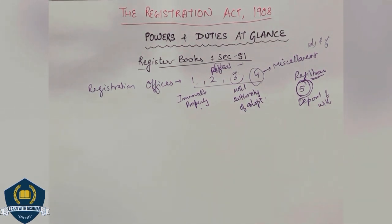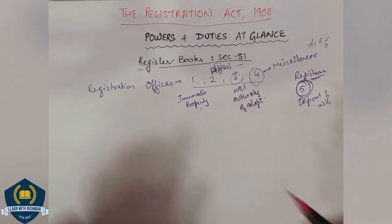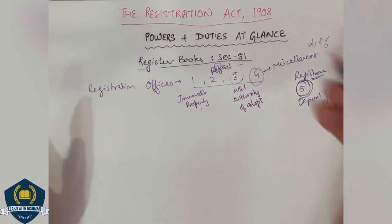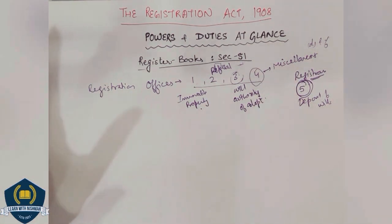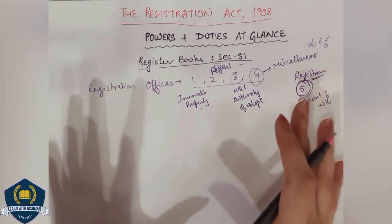So, section 51 is very very important. I hope you now know about all the books — how to bifurcate them, what is written in each book, and which book is found in which office. Now come to a very very important thing: powers and duties. I have divided powers and duties for you and made a flow chart so that it is easy to understand.